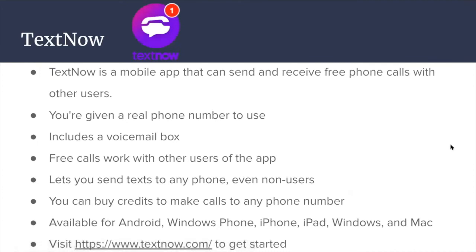TextNow is a mobile app that lets you send and receive free phone calls with other users. You are given a real phone number, and it includes a voicemail box. Free calls work between users of the app, and you can send texts to any phone, even non-users. You can buy credits to make calls to any phone number. It is available for Android, Windows Phone, iPhone, iPad, Windows, and Mac. Visit the provided link to get started.